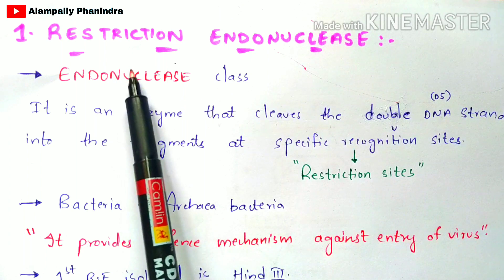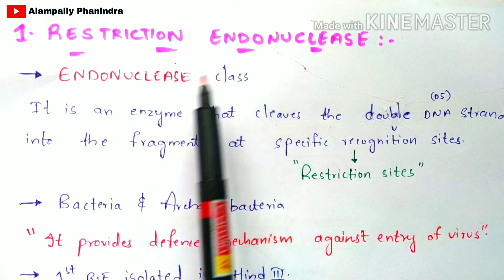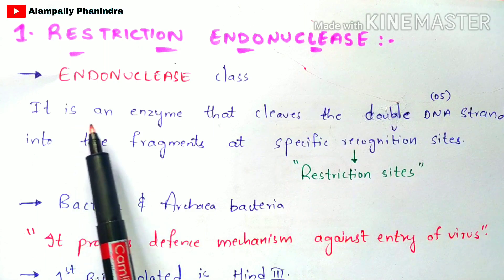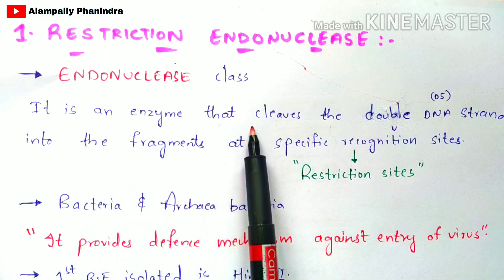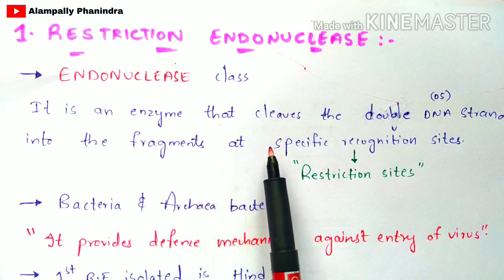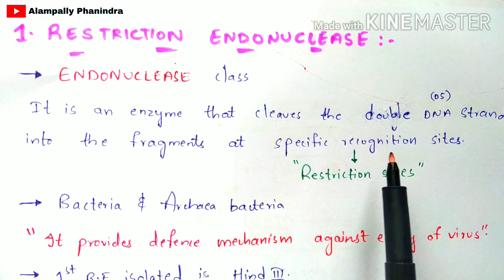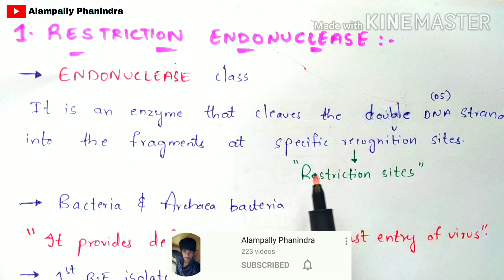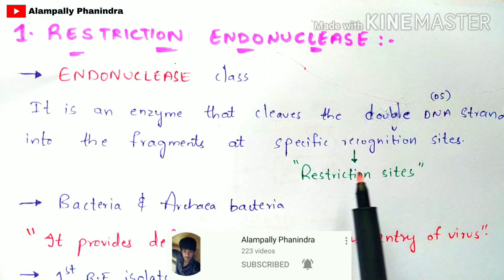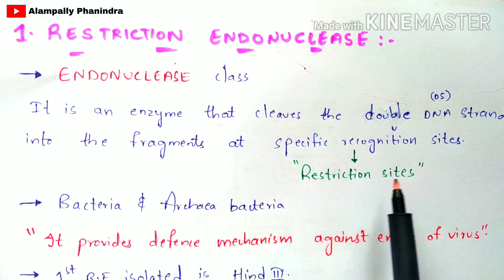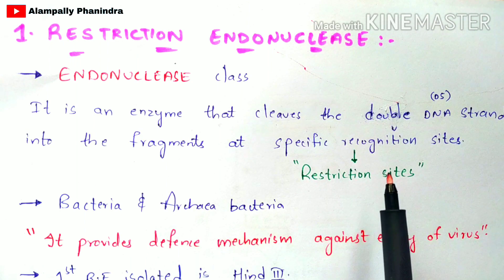Restriction endonuclease enzyme belongs to the class of endonuclease group. It is an enzyme that cleaves double-stranded DNA into fragments at specific recognition sites, which are called restriction sites. The restriction enzyme comes near to the restriction sites of the DNA and starts cleaving the DNA.